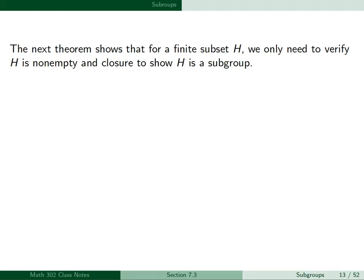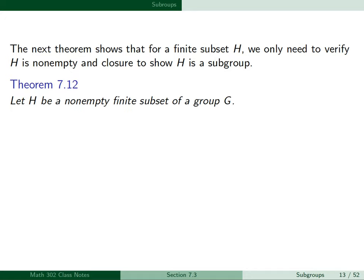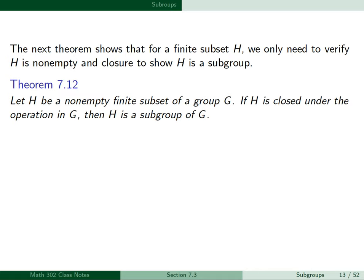The next theorem shows that for a finite subset H, we only need to verify that H is non-empty and closed to show H is a subgroup. This is Theorem 7.12: let H be a non-empty finite subset of a group G. If H is closed under the operation in G, then H is a subgroup of G. We just have to verify it's non-empty and closed; we don't have to verify that it contains inverses.